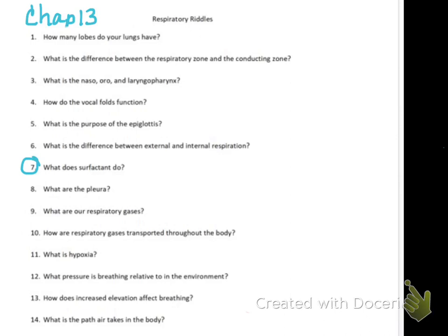During fetal development, surfactant is typically not produced in the alveoli until about 37 weeks gestation. You may hear things like 'the baby was born with lungs not fully matured' - that means surfactant is not being produced. My daughter Sophia was actually born without surfactant; they had to give her an artificial surfactant and she had some breathing issues.